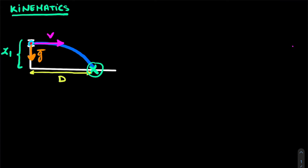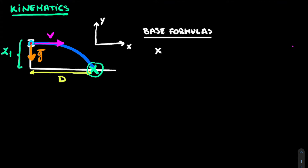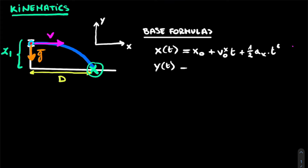Let's define our axes: y in the vertical direction and x in the horizontal direction. The base kinematic formulas are: x(t) = x0 + v0x·t + ½·ax·t², and y(t) = y0 + v0y·t + ½·ay·t². These two equations must hold simultaneously throughout the motion.